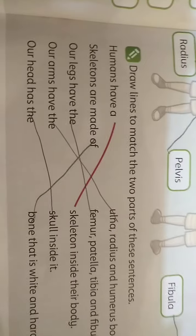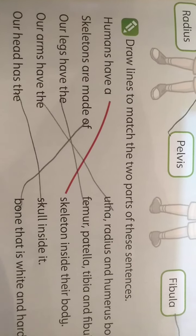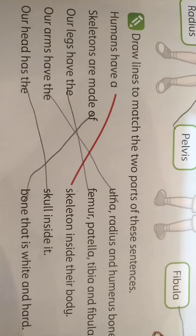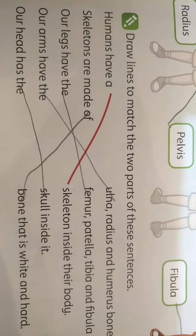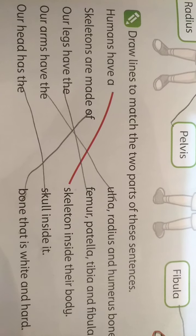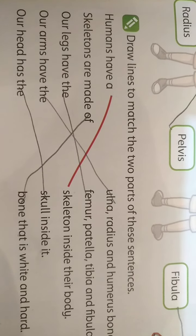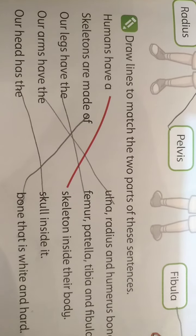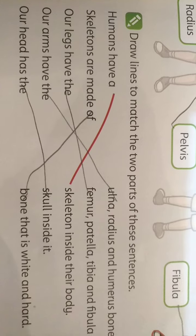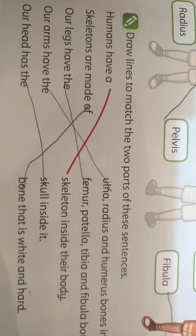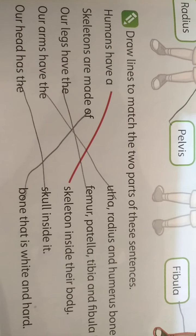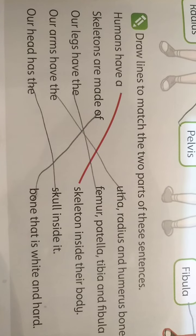The first statement is: humans have a skeleton inside their body. Skeletons are made up of bones that are white and hard. Now I said our legs have the ulna, radius, and humerus bones — but wait, I am wrong. Our legs have the femur, patella, tibia, and fibula bones. Our arms have the ulna, radius, and humerus bones — that is the right answer. And our head has the skull inside it.